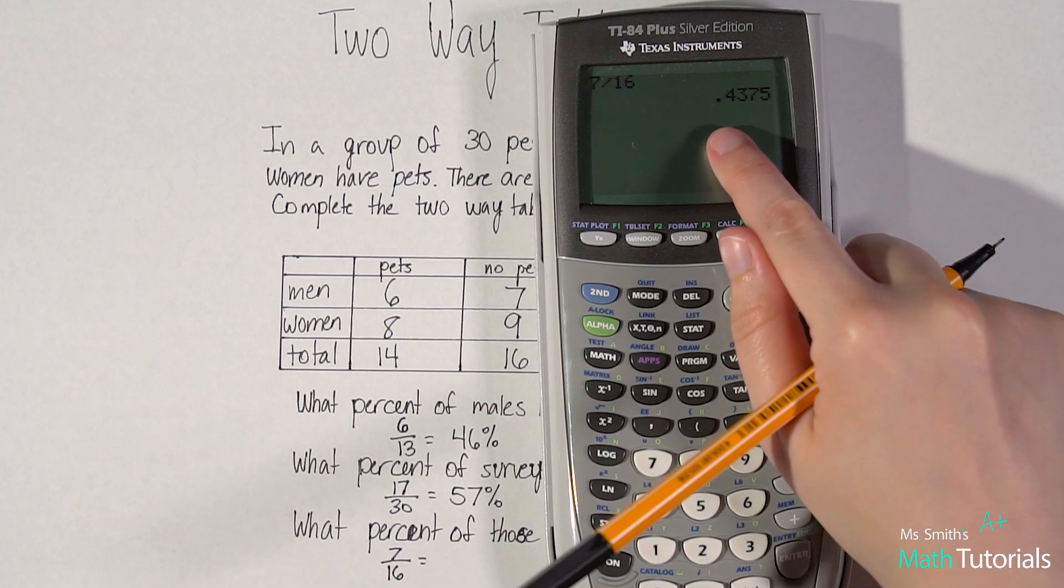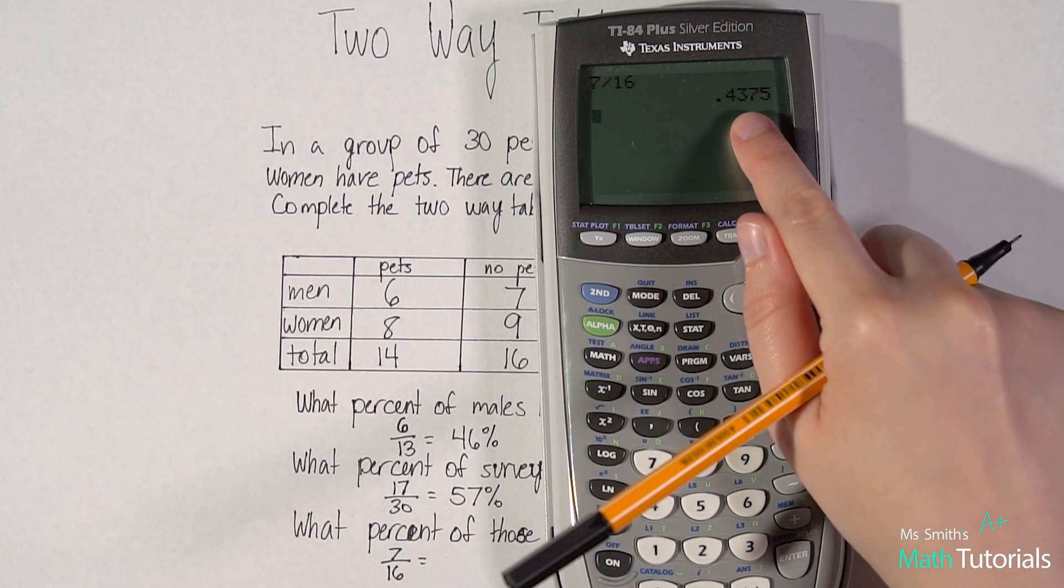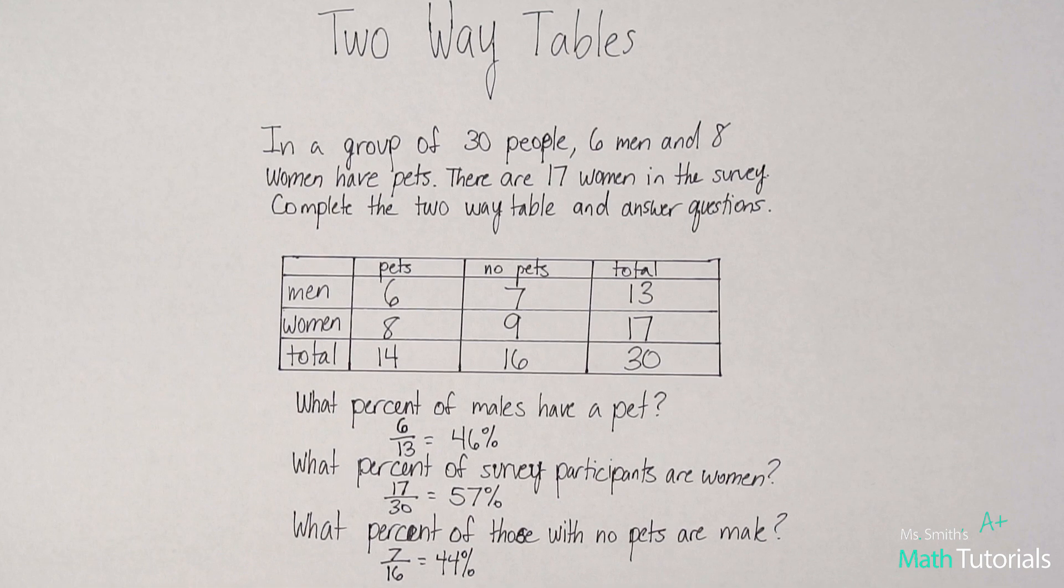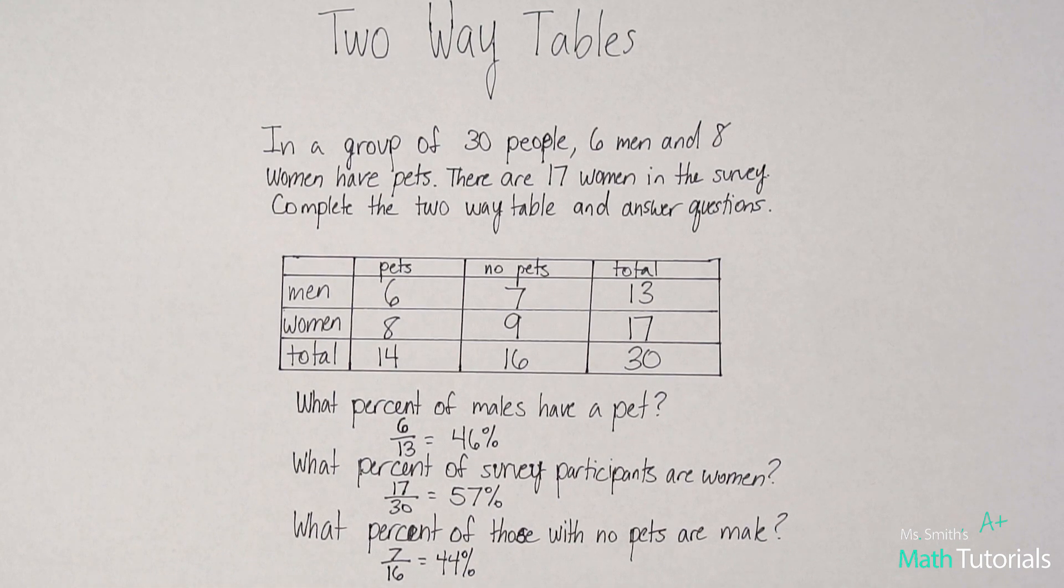All right. I would move my decimal place over two to the right. I would round up because of that seven to 44%. All right. That's two-way tables. This has been Miss Math Tutorials.